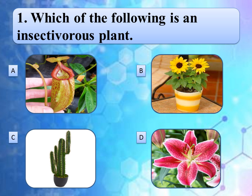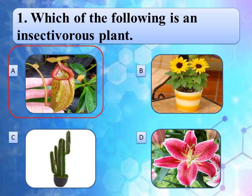Our first question is: which of the following is an insectivorous plant? Look at the pictures very carefully. Think about the correct answer. You can pause the video to think about the correct answer. The correct answer is option A, pitcher plant. Pitcher plant is an unusual plant as it traps and digests insects, hence called an insectivorous plant.